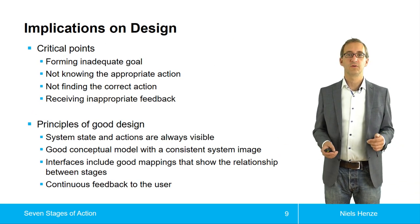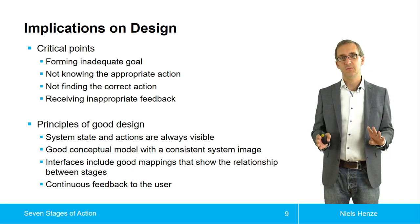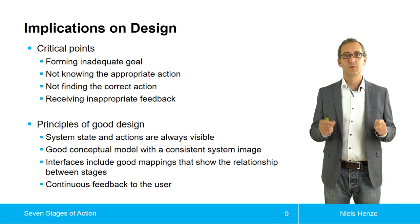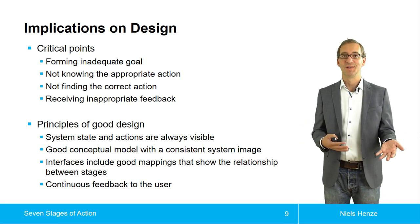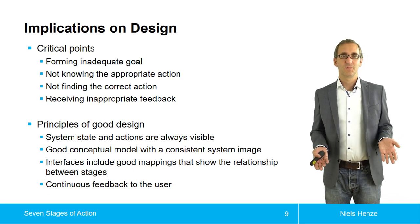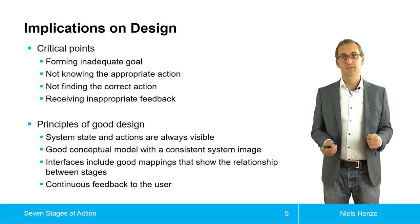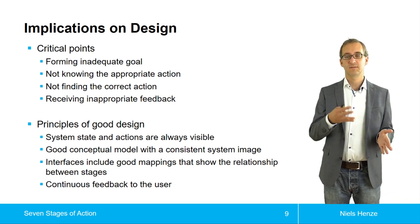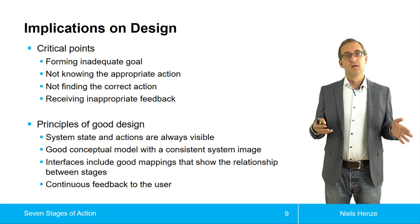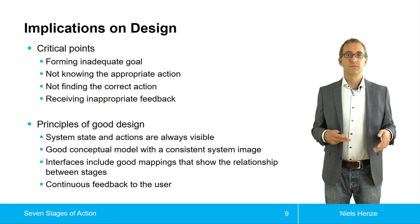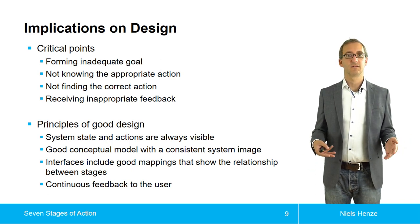Critical points motivated by Norman's seven stages of action are: forming inadequate goals — the most important step, since if users form the wrong goal, nothing good can come out of it; not knowing the appropriate actions or not finding the correct actions; and receiving inappropriate feedback. If you went through all seven stages and don't receive feedback, users won't know if they ended up in the right spot. The next time they go through the seven stages, it's as hard as the first time.